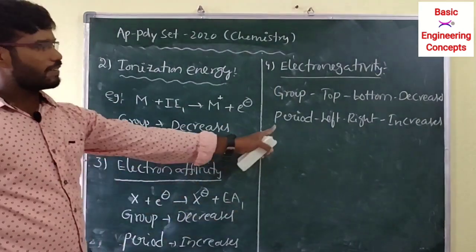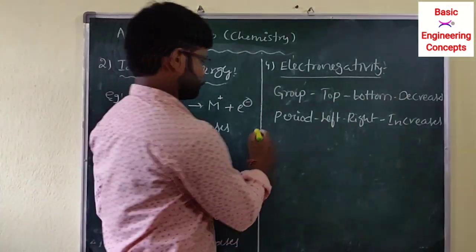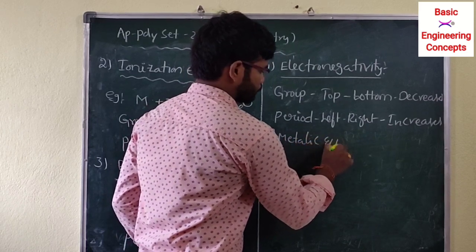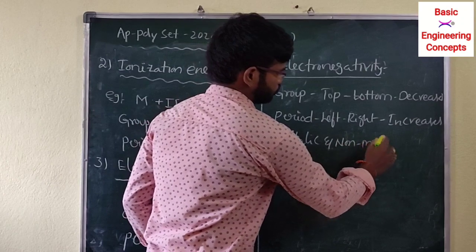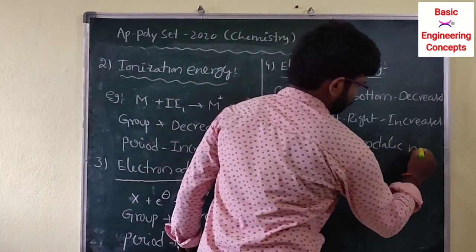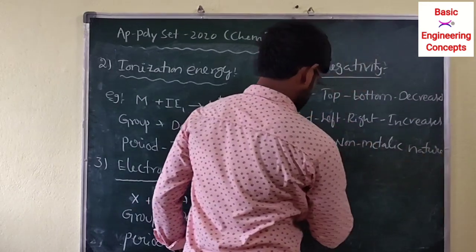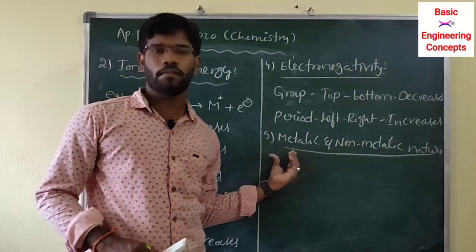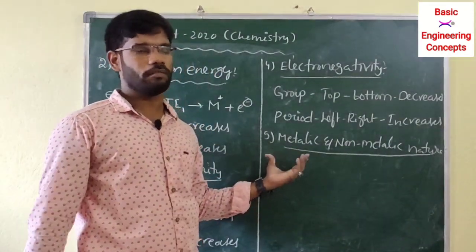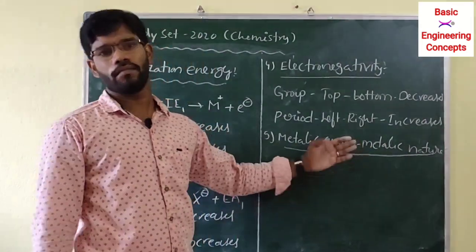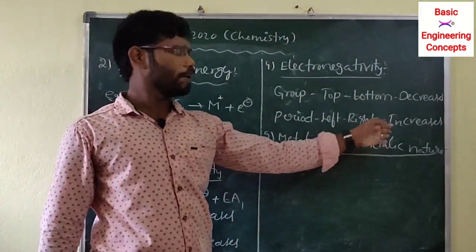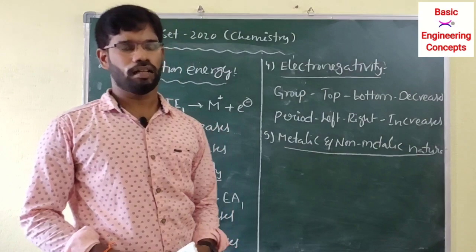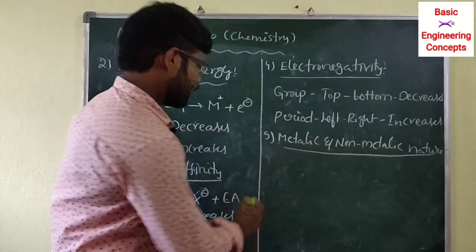The fifth property is metallic and non-metallic nature. Metals carry positive charge — Group 1 and Group 2 elements are metals. Non-metals include elements like carbon, nitrogen, and oxygen families.